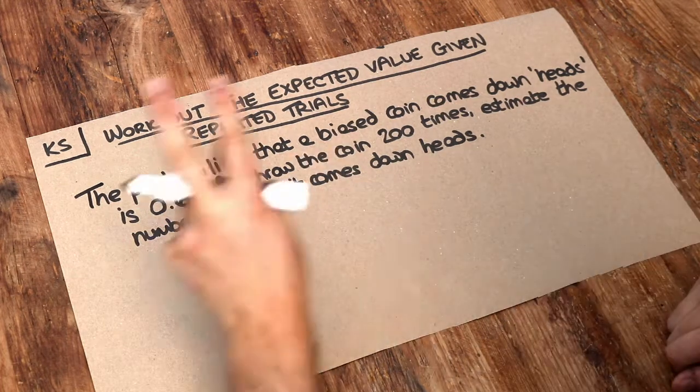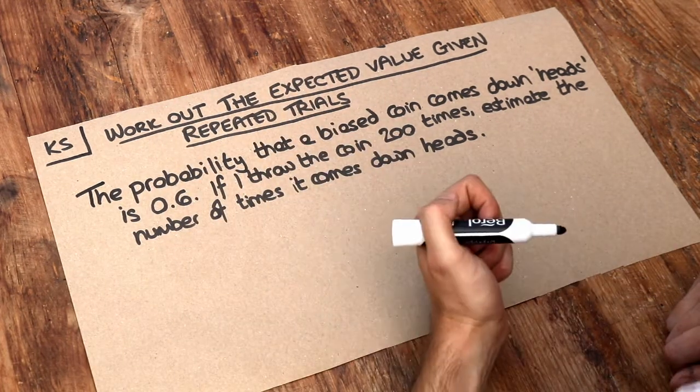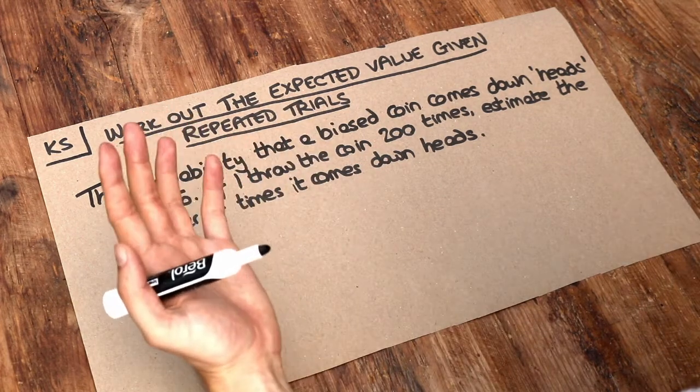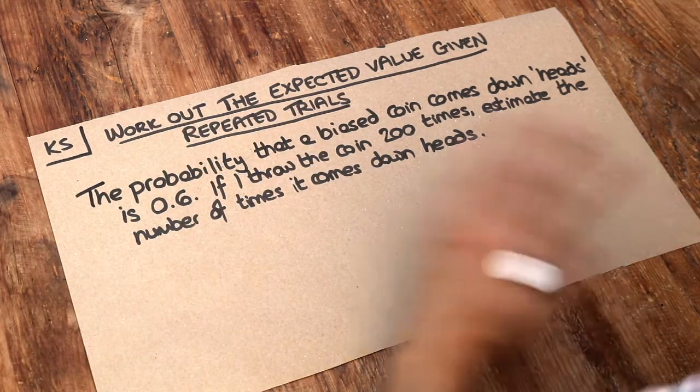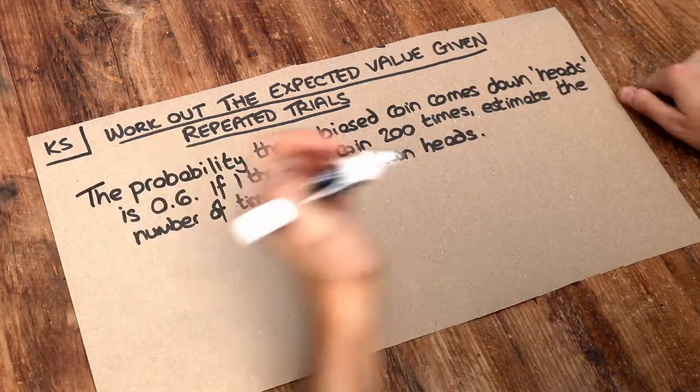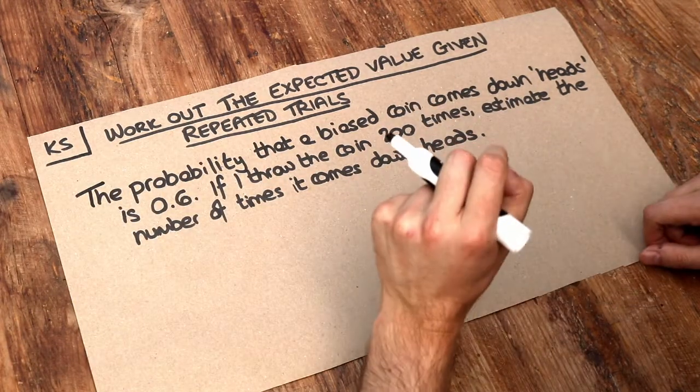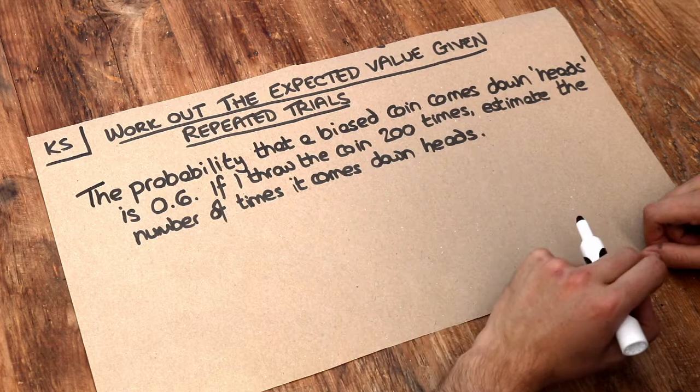We don't know we'll see that number of heads because we could throw the biased coin 200 times and we could get 200 heads. It's unlikely, but because the coin acts randomly we could get 0 heads, we could still get 200 heads. But we're most likely to see a head 60% of the time.